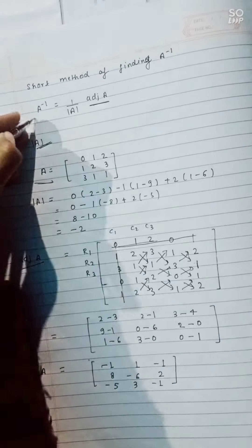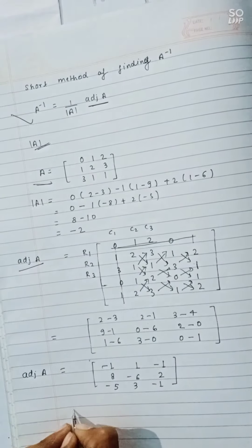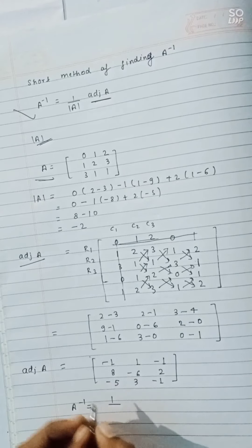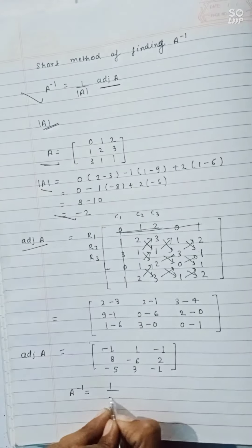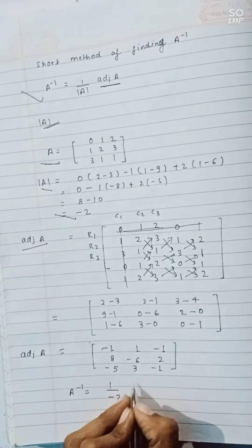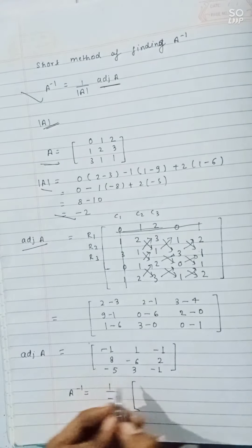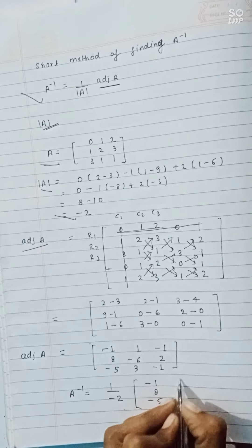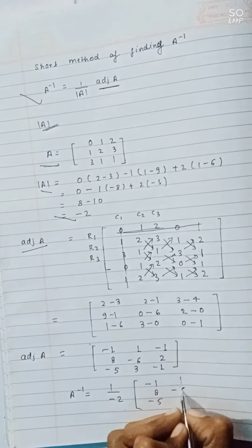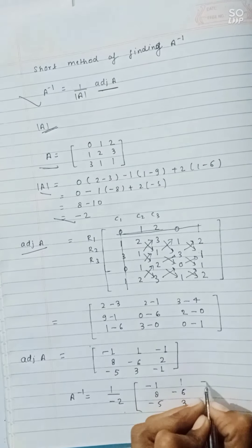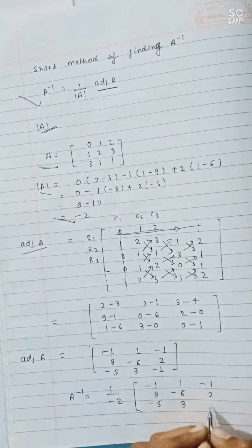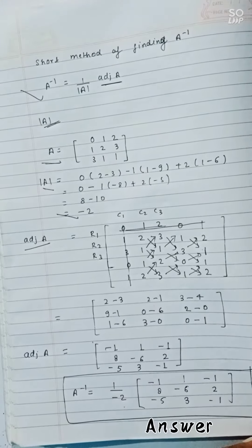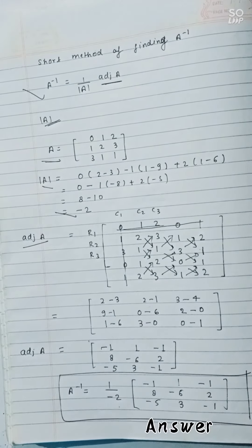Now by the formula, we find A inverse, which is 1 upon mod of A — which was minus 2 — multiplied by the adjoint of A: [minus 1, 8, minus 5 / 1, minus 6, 3 / minus 1, 2, minus 1]. This is our A inverse. Thank you.